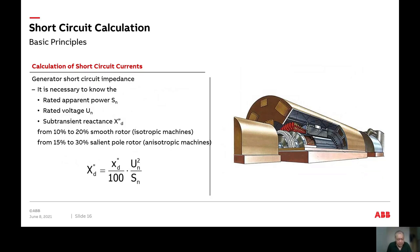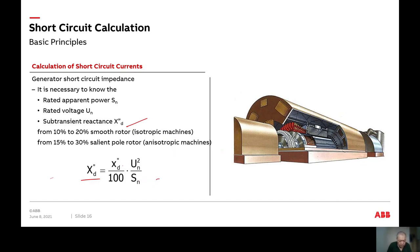Generators are also able to provide current — they are another source. We can find the impedance of the generator based on the sub-transient reactance, Xd double prime. We can either find the impedance first then calculate the current, or jump straight to finding the current using the sub-transient reactance directly.